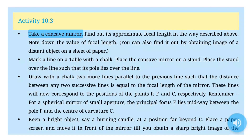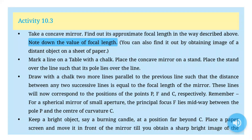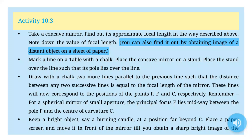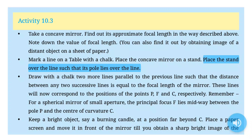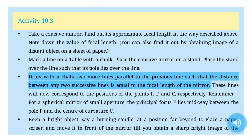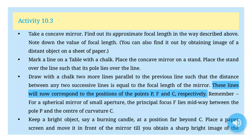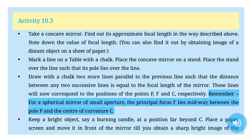Activity 10.3: Take a concave mirror. Find its approximate focal length. Note down the value of focal length. Mark a line on a table with a chalk. Place the concave mirror on a stand over the line such that its pole lies over the line. Draw two more lines parallel to the previous line such that the distance between any two successive lines is equal to the focal length of the mirror. These lines will correspond to the positions of points P, F and C respectively. For a spherical mirror of small aperture, the principal focus F lies midway between pole P and center of curvature C.